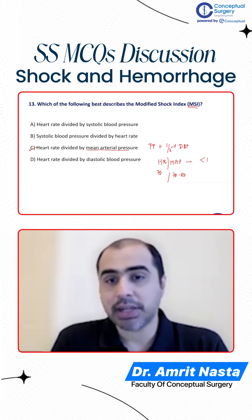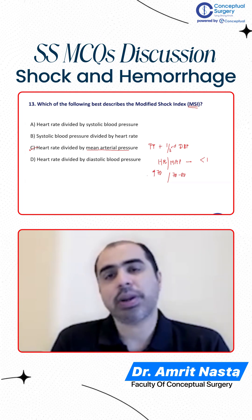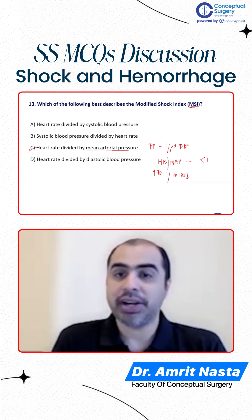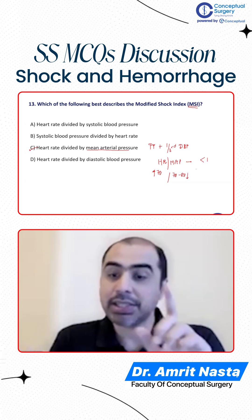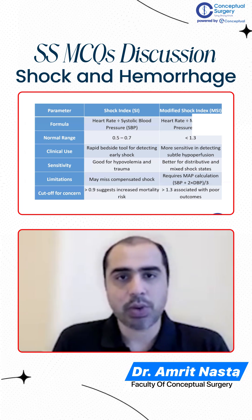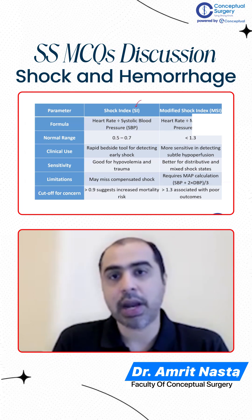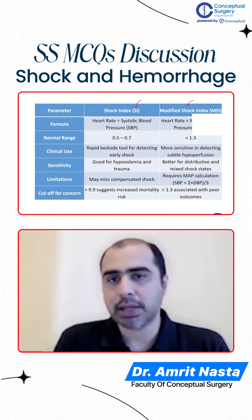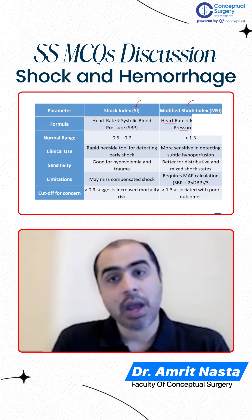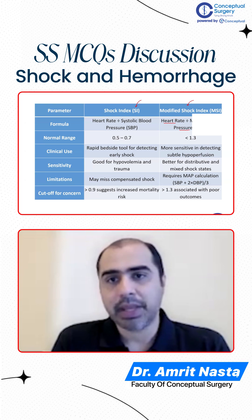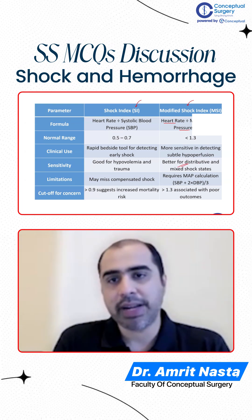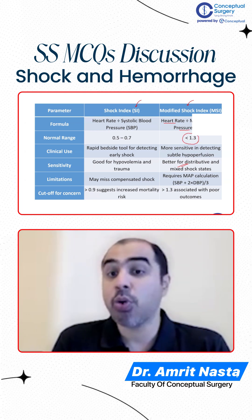If my heart rate is increasing too much — because that's what happens when I am having shock — and my mean arterial pressure falls, the modified shock index will become more than 1, which is a dangerous thing. There are two indices. The question asked about modified shock index, which is heart rate upon MAP — a better marker. A decline in this modified shock index is associated with a poor prognosis.